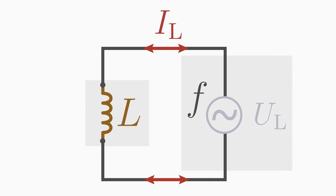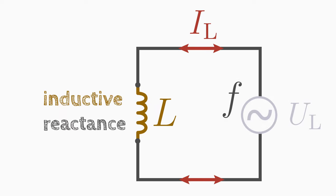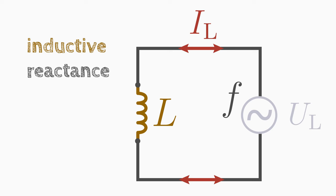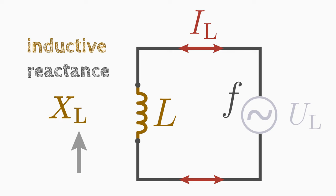A coil to which an alternating voltage is applied has a complex non-ohmic resistance, which is called inductive reactance. This resistance is usually abbreviated with the letter X with a subscript L.